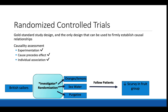In our scurvy example, if we wanted to conduct a randomized control trial, we would take the British sailors and randomize them to one of three groups: the one that would receive oranges and lemons, a group that gets seawater, and a third group that gets the purgative. Then we would follow the patients and see if there was a decrease in scurvy in the fruit group.